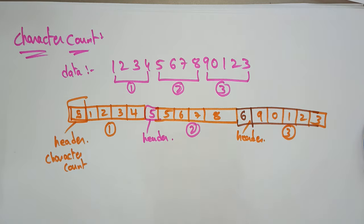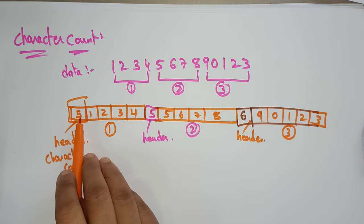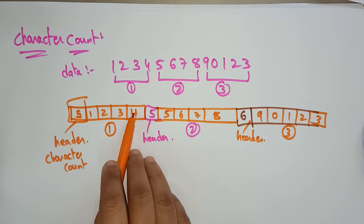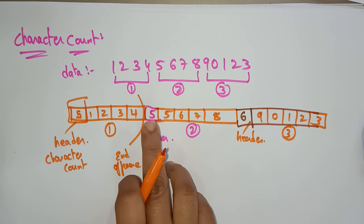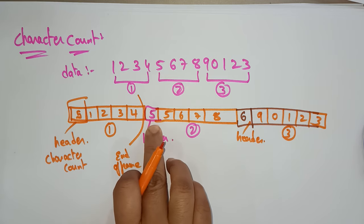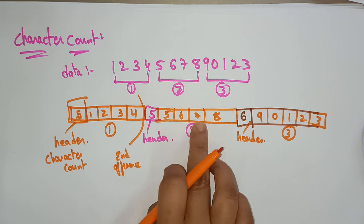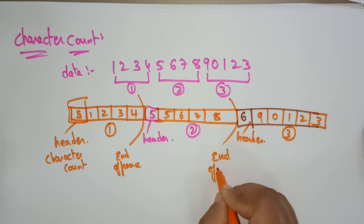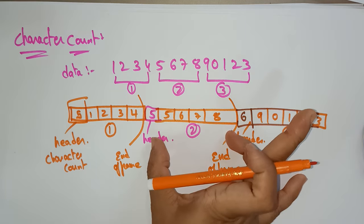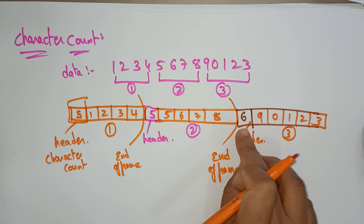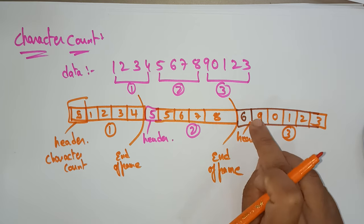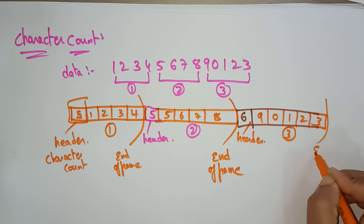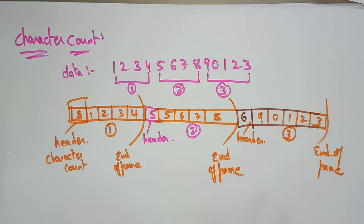Whenever the receiver receives data, it checks the header. If the header says 5, it counts characters 1 through 5 — end of frame. The next frame starts with header 5 again, the receiver counts 5 characters — end of second frame. For the third frame, header is 6, so it counts 6 characters — end of frame. This is the message received without any error.